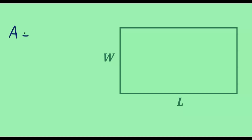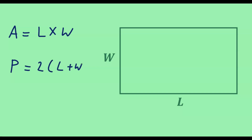The area of this rectangle is given by l times w, and the perimeter is given by 2 times l plus w. To find the area — that is, to determine the space covered by the rectangle — we multiply the length of the rectangle by the width of the rectangle.